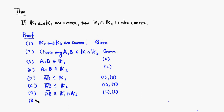Step eight: Therefore, we conclude that k1 intersect k2 is convex. I'm using step 2 and step 7 for this conclusion.